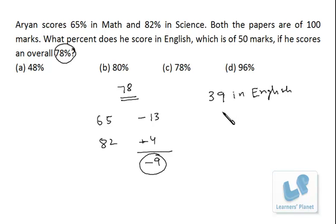So if he gets 9 more marks, he'll be getting 48 marks in English, and 48 marks out of 50 is 96%. It's a very simple concept and we have solved the problem through the deviation method.